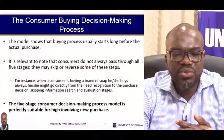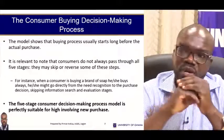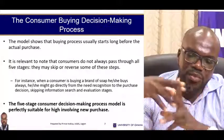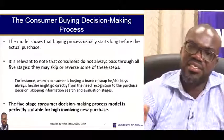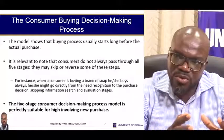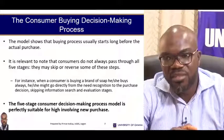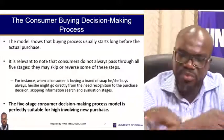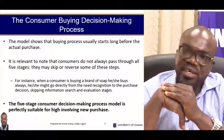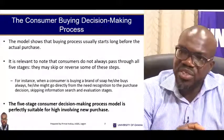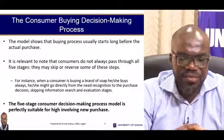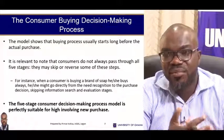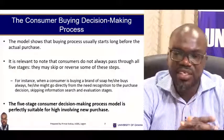This model indicates that the buying process usually starts long before the actual purchase. It is relevant to know that consumers do not always pass through all five stages — they may skip or reverse some steps based on the peculiar situation. For instance, when a consumer is buying a brand of soap they always buy, they might go directly from need recognition to purchase decision, skipping information search and evaluation of alternatives, because learning has taken place and they rely on previous experience.